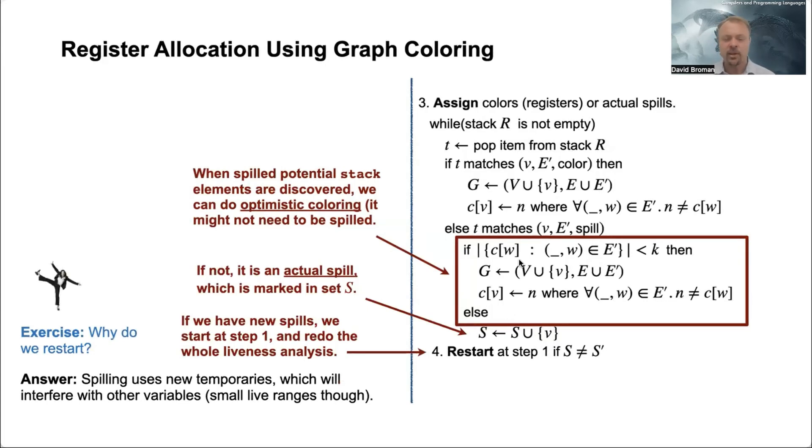So the idea here is that you first try to use all registers. But if it turns out that you want to do this spilling, you need to have that register. But that means that you're more constrained, so you have to redo the actual analysis.